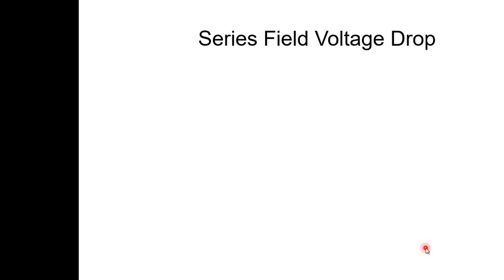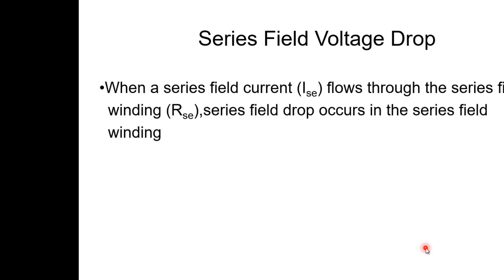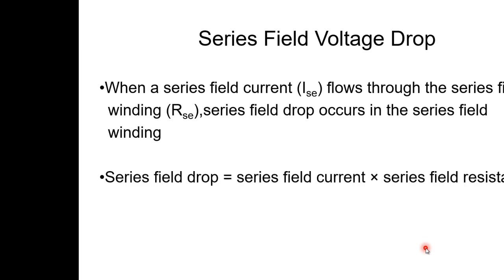The next is series field voltage drop. When a series field current Ia flows through the series field winding RSC, a series field drop occurs. So, series field drop equals series field current into series field resistance, that is VSC = Ia × RSC.